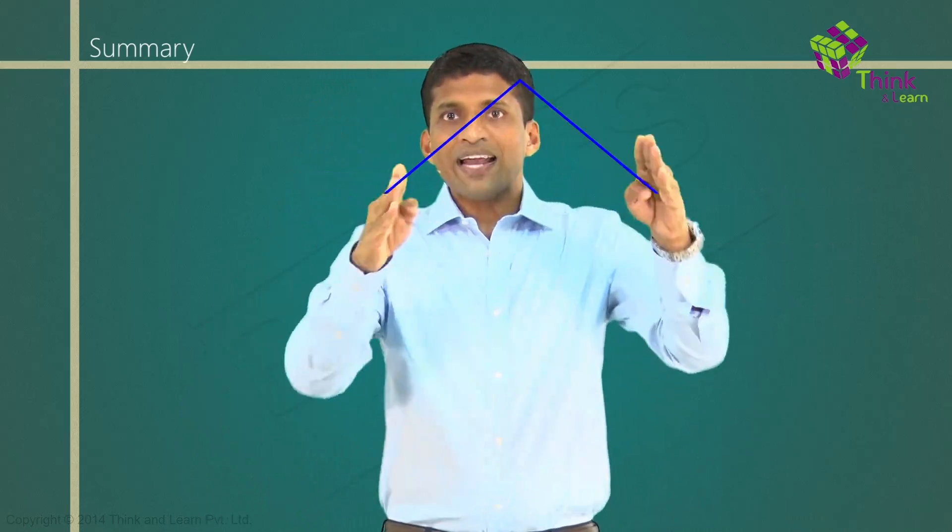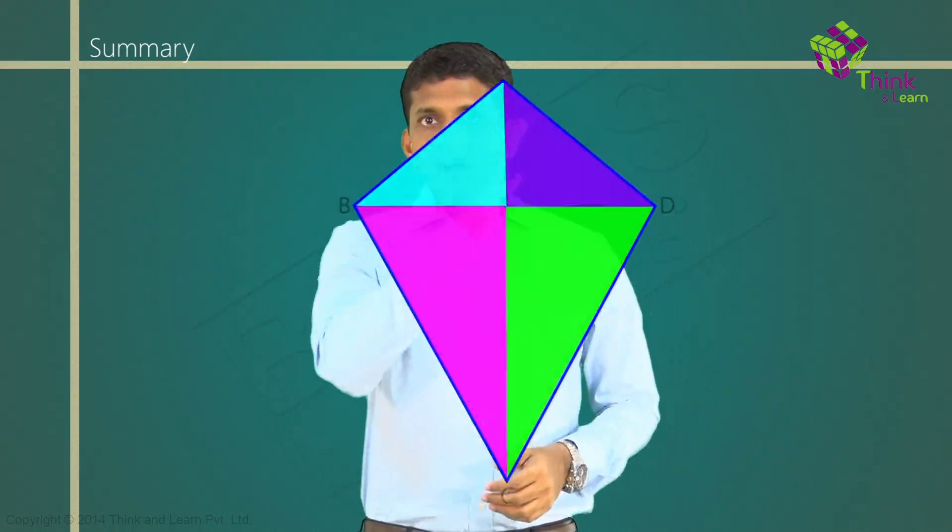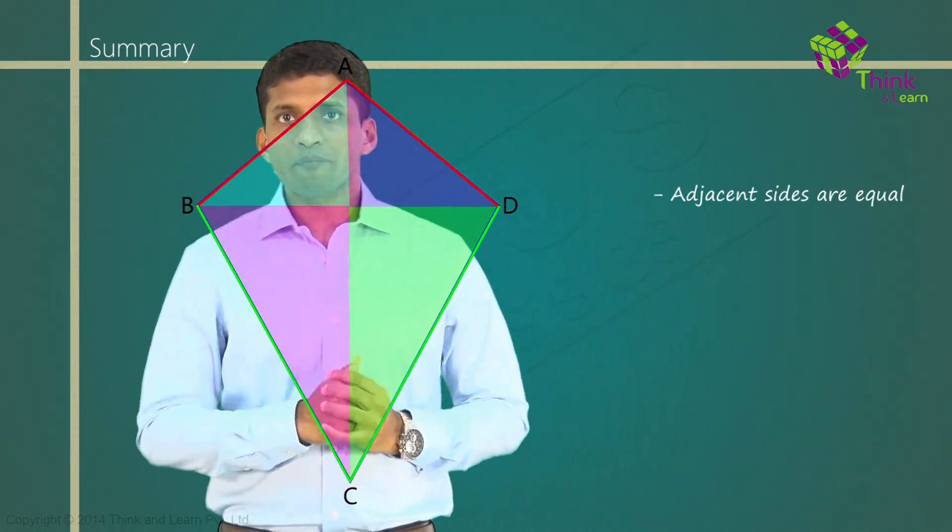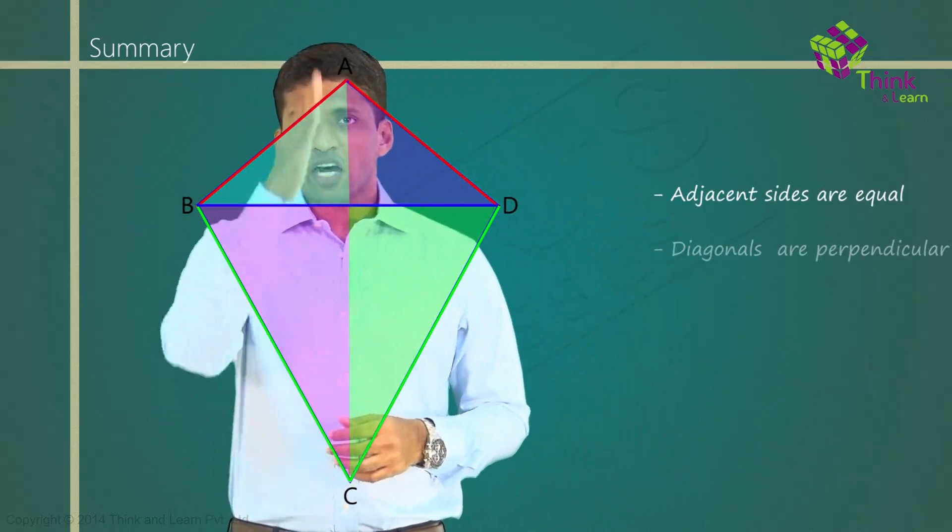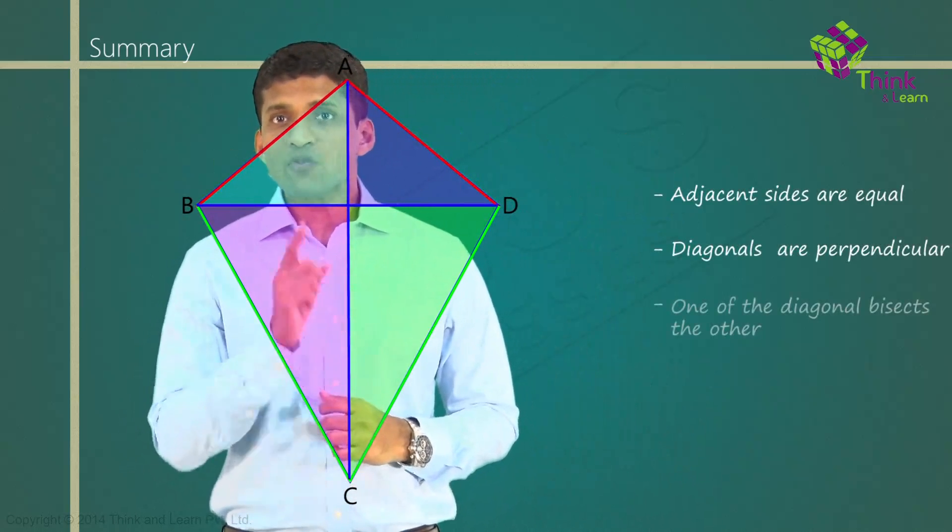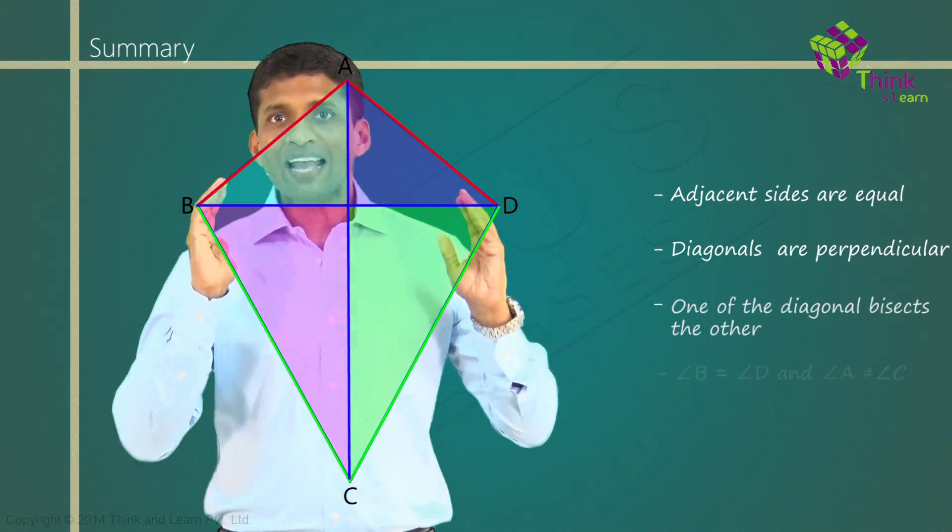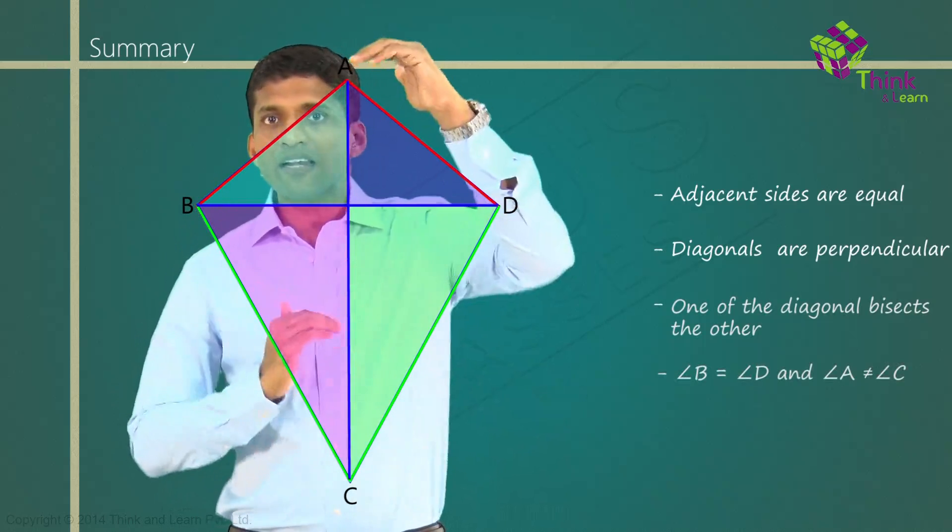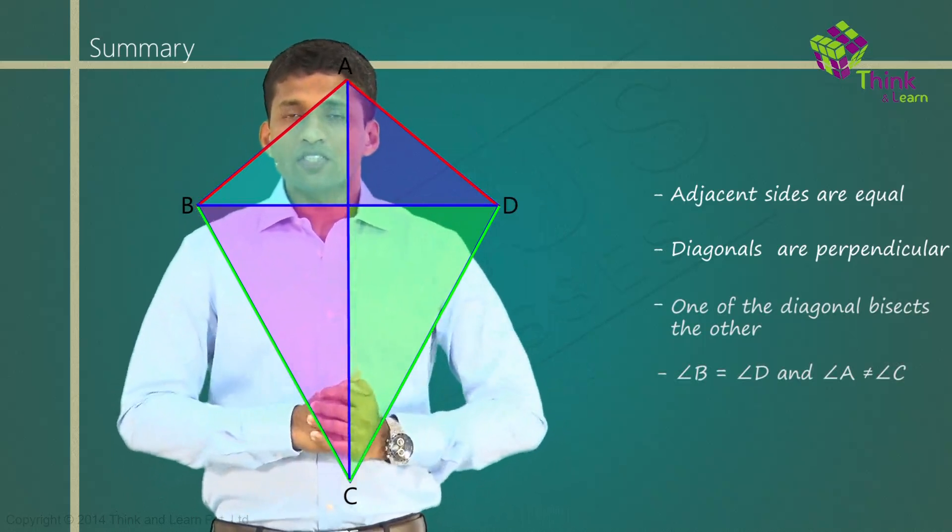Now, in a kite like this, adjacent sides are equal, diagonals are perpendicular to each other, one of the diagonals will bisect the other one, angle B equal to D, angle A not equal to C. So that's about kites.